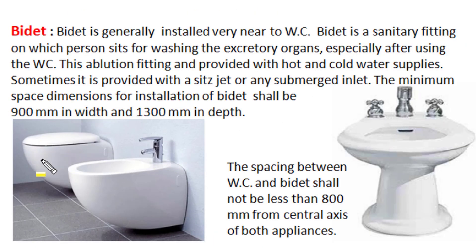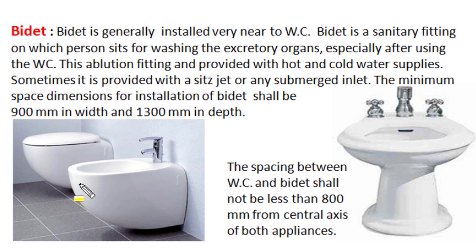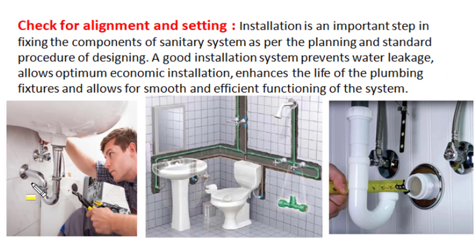A bidet is generally installed very near to the water closet. It is a sanitary fitting on which a person sits for washing excretory organs, especially after using the WC. Ablution fittings provide both hot and cold water, and sometimes a submerged jet. The minimum spacing for a wall-mounted bidet shall be 90 cm in width and 130 cm in depth, with length matching the WC. The spacing between the WC and bidet should not be less than 800 mm from the central axis positions of both appliances.